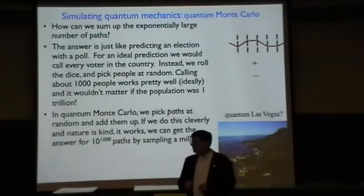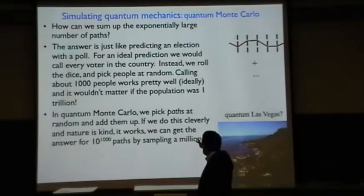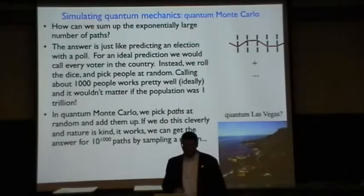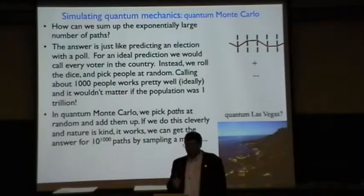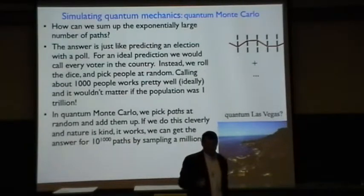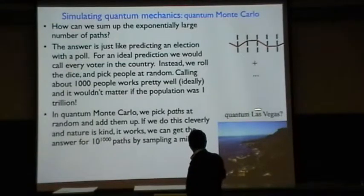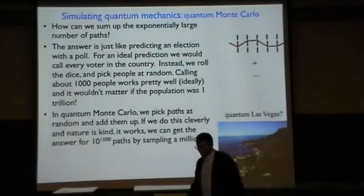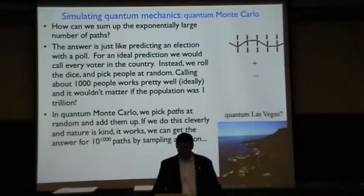In quantum mechanics, the correct answer is actually the sum of the waves of all of these many exponentially large numbers of paths. The way this particular method works, it comes from rolling the dice, it comes from back in the forties. Monte Carlo was the big gambling place in the world. Nowadays, I suppose you might call it Quantum Las Vegas. This is a picture of Monte Carlo.